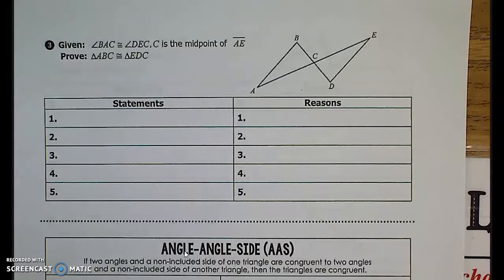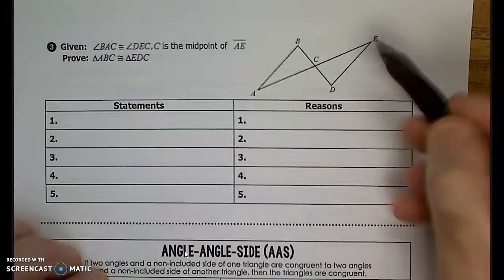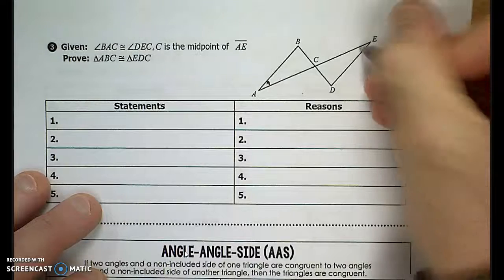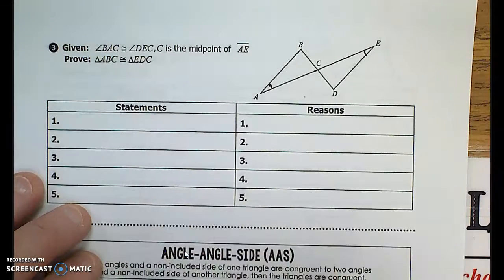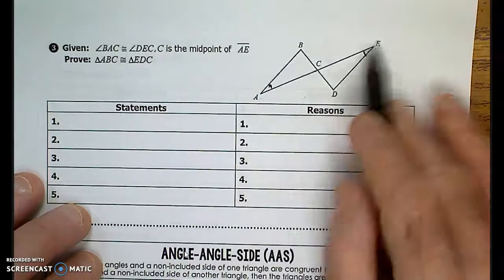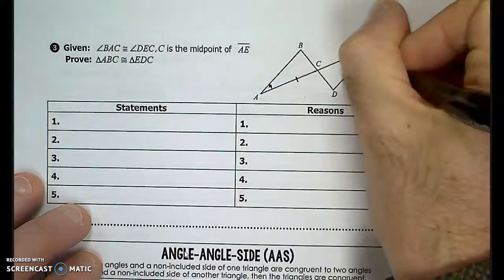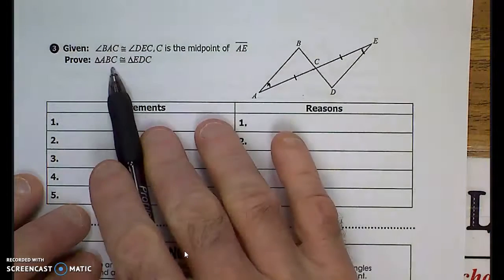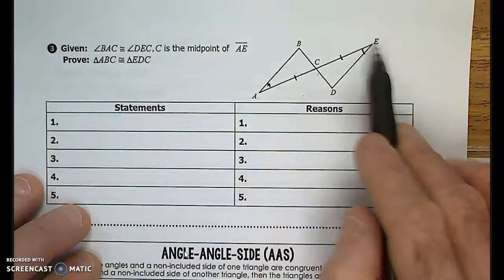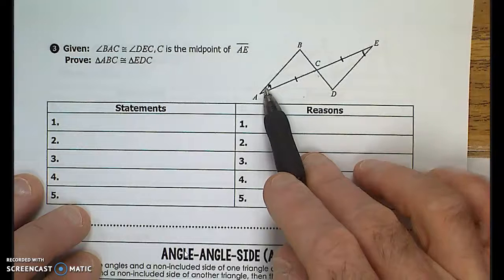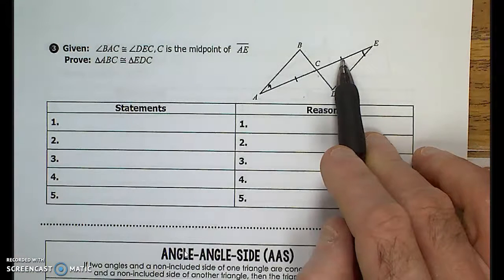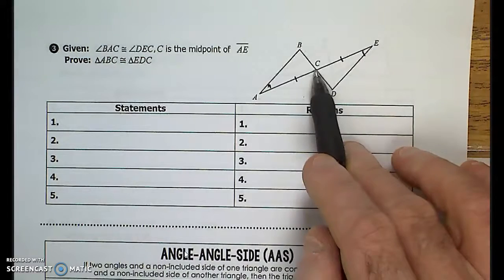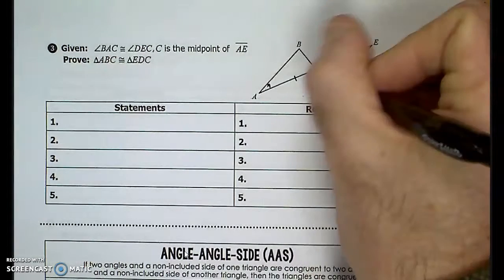Question number 3: given that angle BAC is congruent to angle DEC — I write that down using an arc on the diagram. Whatever I draw on the diagram I'm going to have to add to my statements. C is the midpoint of line segment AE, which means it divides AE into two equal parts. I want to prove that triangle ABC is congruent to triangle EDC. I know an angle, a side, and an angle — for ASA I need another angle. But we know these are vertical angles, so they'll be congruent as well. Now I have angle, side, angle and I'm good to go.